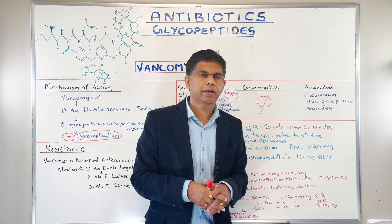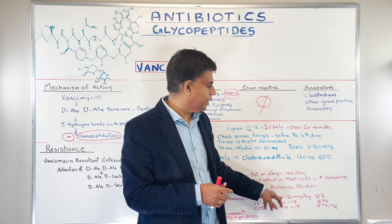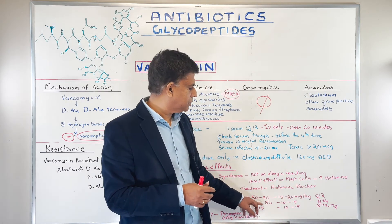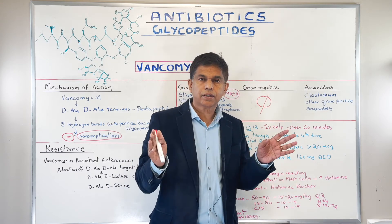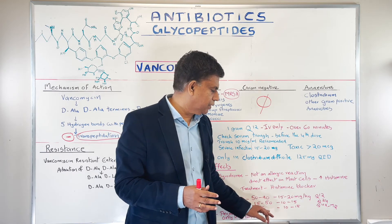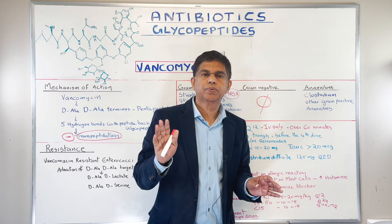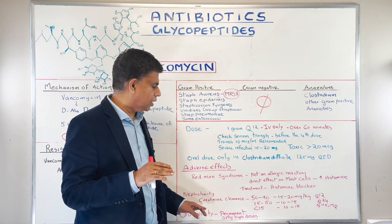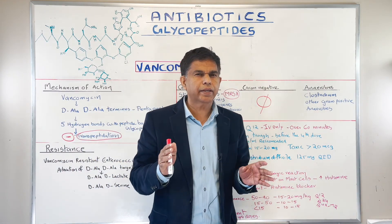Nephrotoxicity: vancomycin can cause renal failure, so you must adjust the dose based on kidney function. If creatinine clearance is 50–90, give 15–20 mg/kg every 12 hours. If creatinine clearance is 15–50, give 10–50 mg/kg every 24 hours. If creatinine clearance is less than 15, give 10–50 mg/kg every 48 to 72 hours.